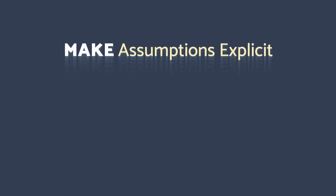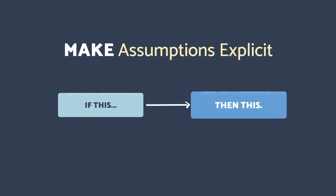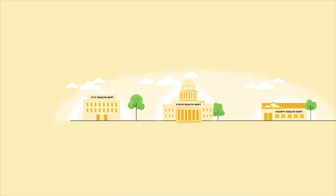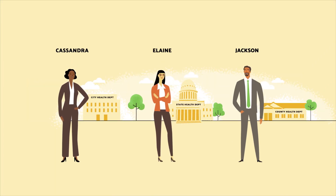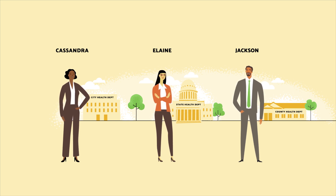Finally, we can be very explicit in noting any assumptions we have between the boxes or nodes in our logic model. This will lead to insights about how our stakeholders expect the adaptation to work. Let's now check in with our practitioners to see how they are using these practices to describe their health adaptations, the second step of the evaluation framework.